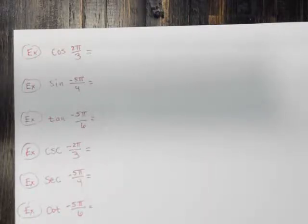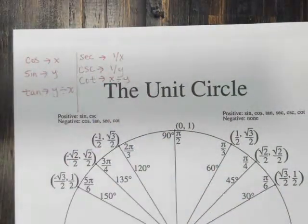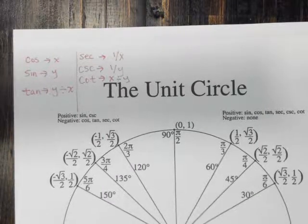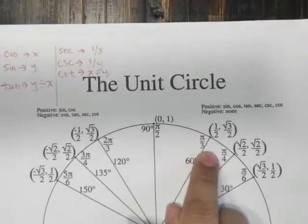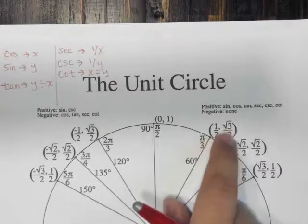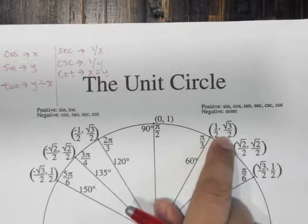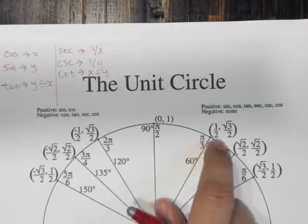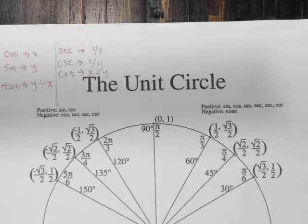There are a few important things to point out. The note at the top of my unit circle is that cosine is the x-value, the x-coordinate. So if we're looking at π/3, the cosine of π/3 would be 1/2. The sine would be square root of 3 over 2, and the tangent would just be y divided by x — we'll get into examples of that later.